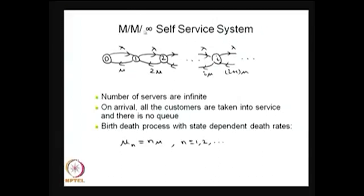The fifth model is MM-infinity. It is not a queuing model because the servers are infinite — there is unlimited capacity. Every arriving customer immediately begins service. Service time is exponentially distributed with parameter mu for each identical server. The underlying stochastic process is a birth-death process with birth rates all equal to lambda (infinite source population) and death rates 1·mu, 2·mu, and so on.